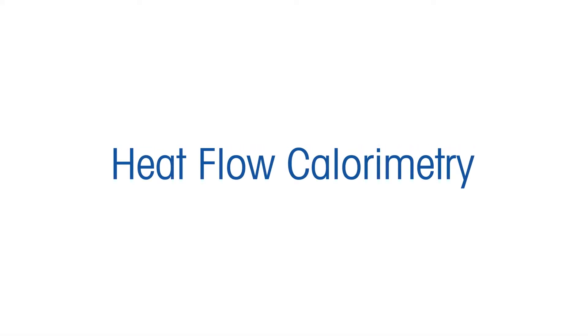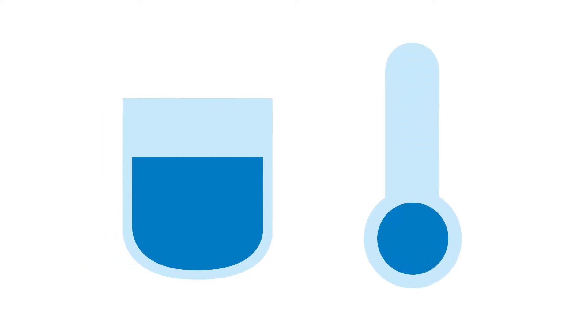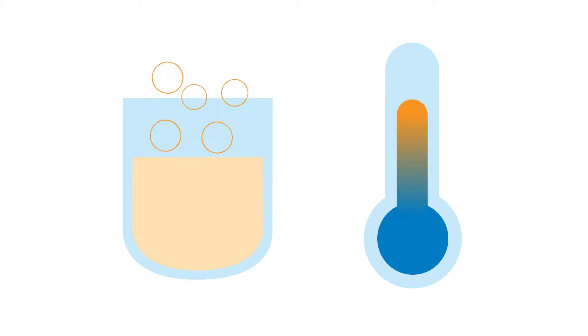Heat flow calorimetry allows scientists to measure the heat of a chemical reaction while the process temperature, typically the reaction mass temperature, remains at the set value. Usually, a double-wall reactor is used in which the desired reaction is carried out under or near process-like conditions.